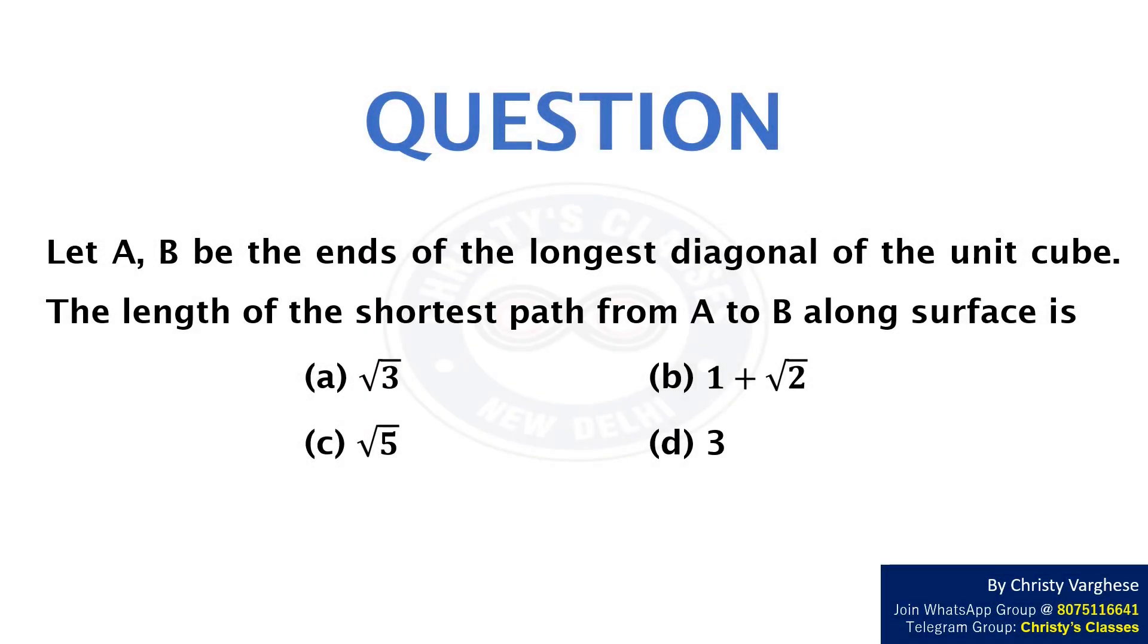In this video let us find the length of the shortest path between two given points of a cube. Let A and B be the ends of the longest diagonal of the unit cube. The length of the shortest path from A to B along the surface is: A) √3, B) 1 + √2, C) √5, or D) 3.